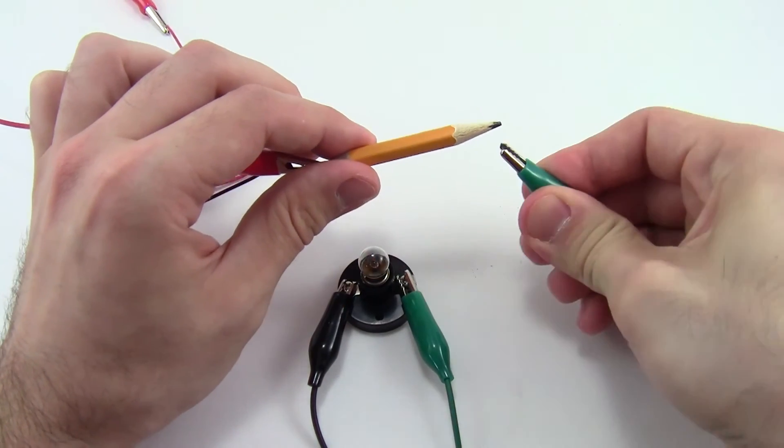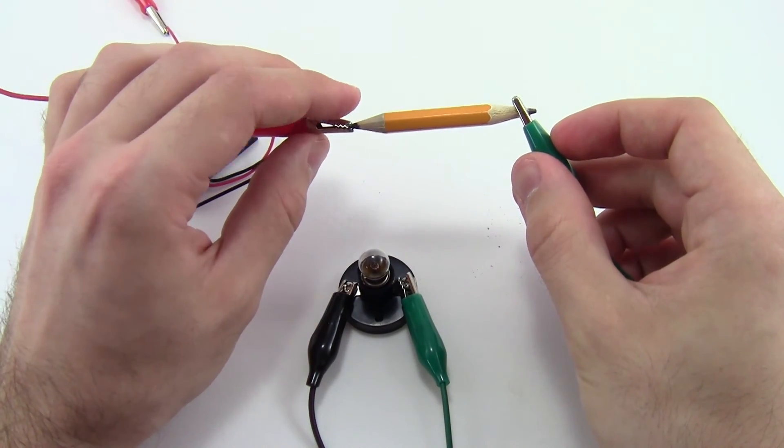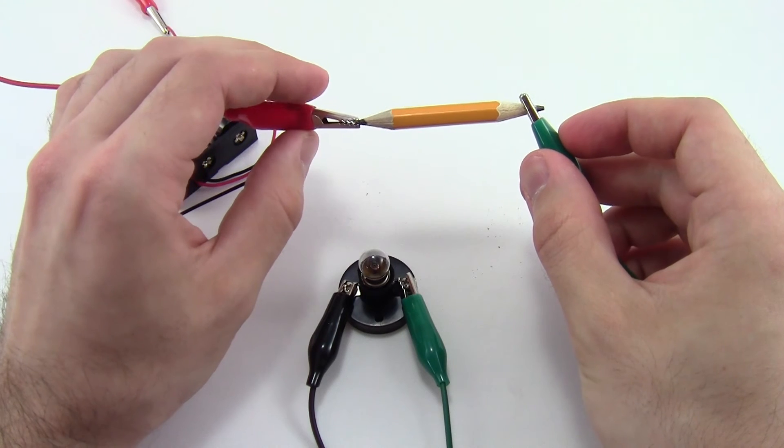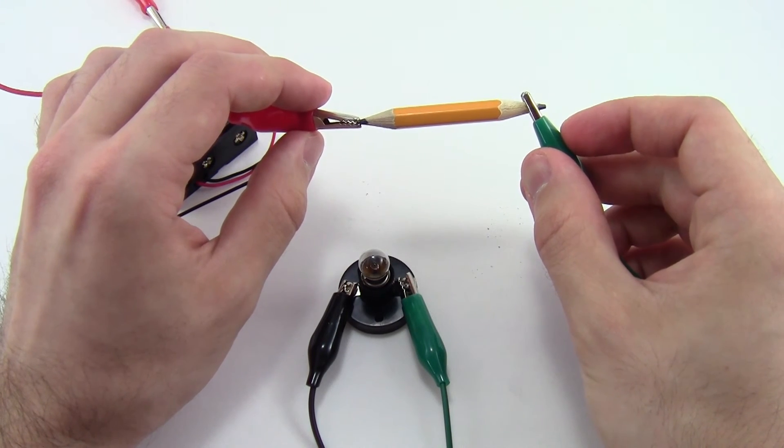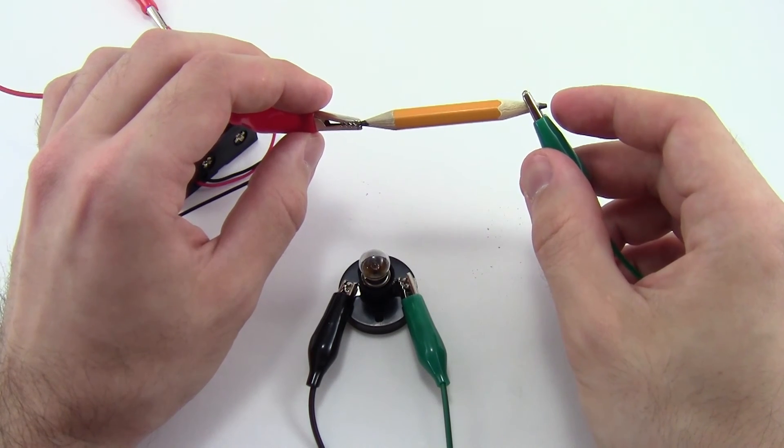But again, be careful. You'll see that if I clip on and don't make good contact with the graphite, and I'm only touching the wood, the light bulb will not light up at all, and that will affect the results of your experiment. So make sure the metal from the alligator clip makes good contact with the graphite tip of the pencil.